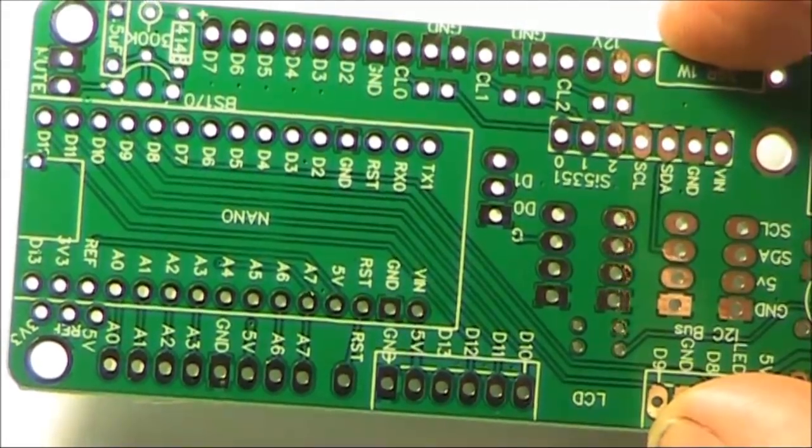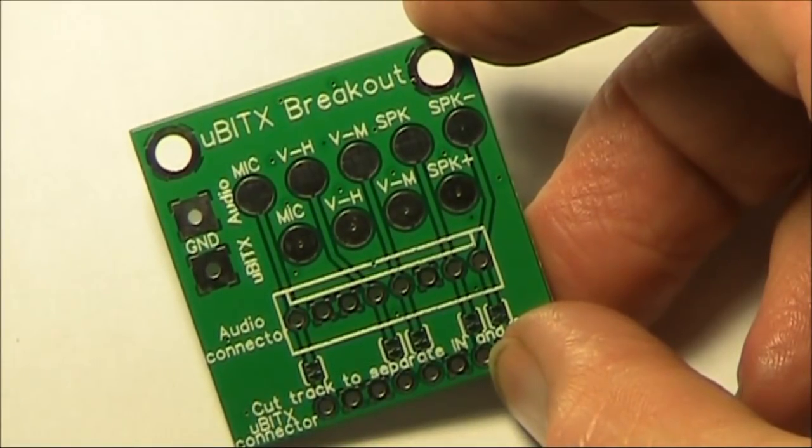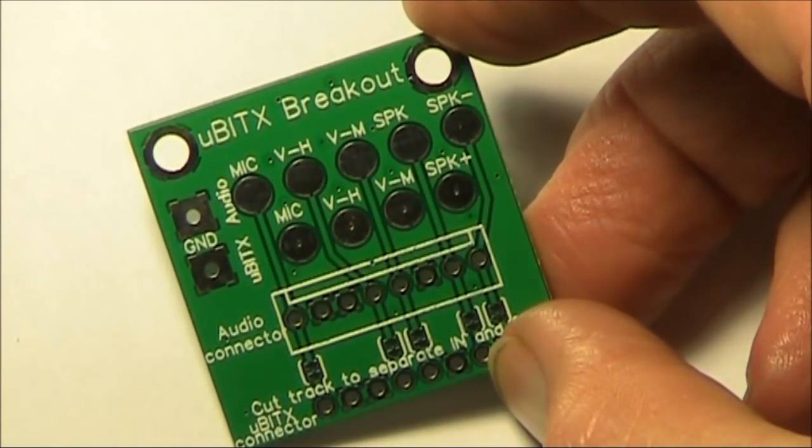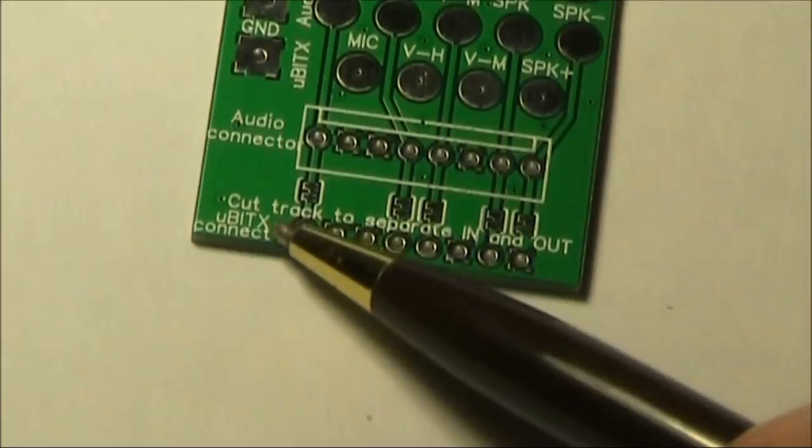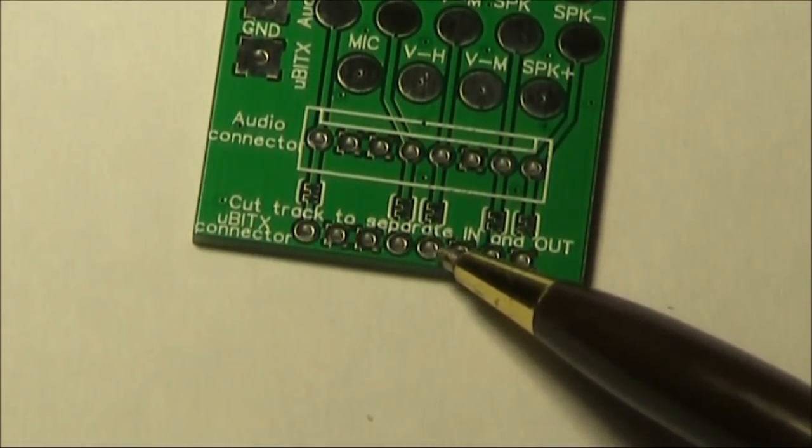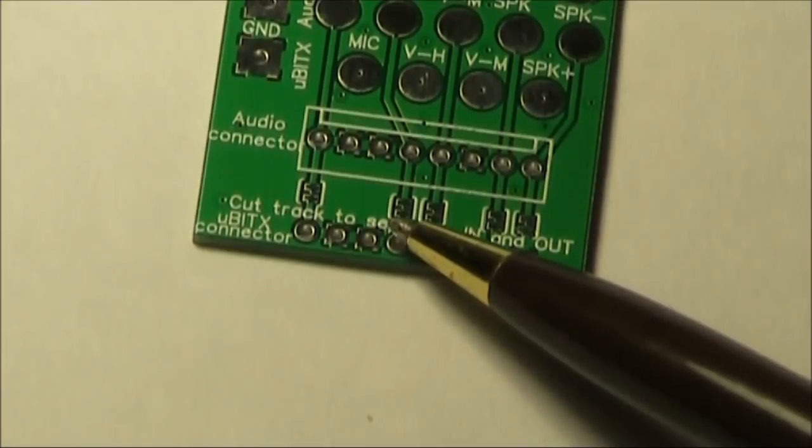The boards appear to be of very high quality. The next board is an audio breakout, which allows you to more easily tap into the audio connections. One feature of it is that you can cut the track to separate audio in and audio out. That could be useful for connecting things like mic preamps or filters.